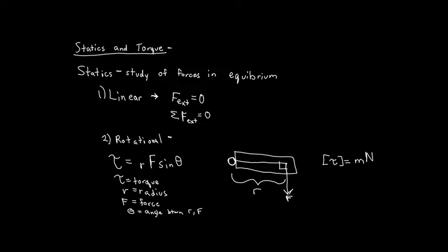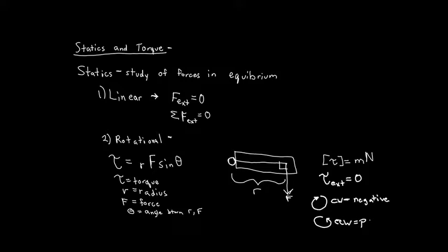If we're going to study torque in terms of statics, we need to understand that the external forces are not going to be equal to zero. In statics for rotational motion, the external torques are going to be equal to zero. The final thing to note for torque is direction. For rotational motion, it's tough to define directions because you're going around in a circle. The typical way we define it is in terms of a clock. If your torque is rotating you clockwise, then by convention that torque is considered negative. And if your torque is going counterclockwise, that torque is considered positive.